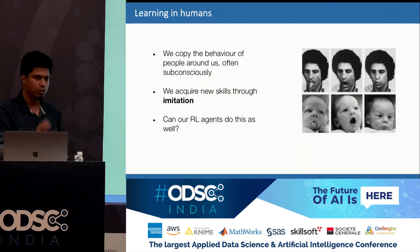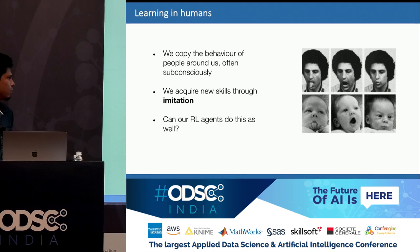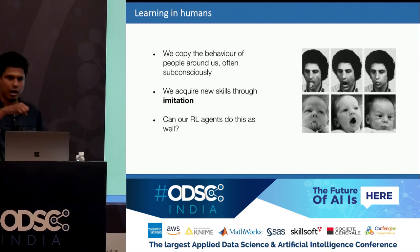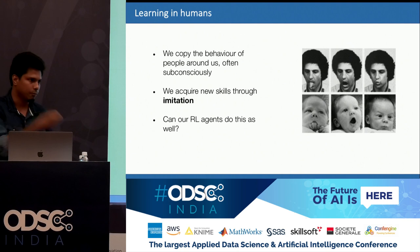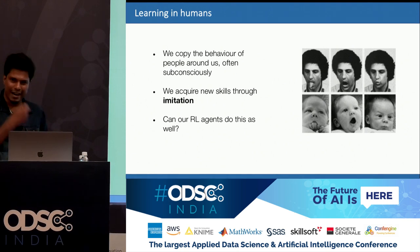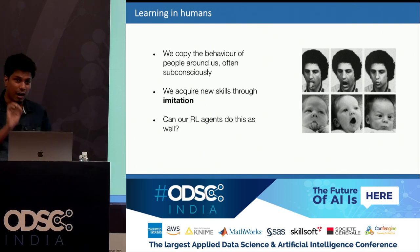Switching to a separate topic — and why we are doing this will make sense in a while. How do we as humans learn? A majority part of our learning is done by imitating others, and we often do this subconsciously. A large part of our attitudes, language, behavior, and skills is shaped this way. The question is: can our RL agents learn through imitation?